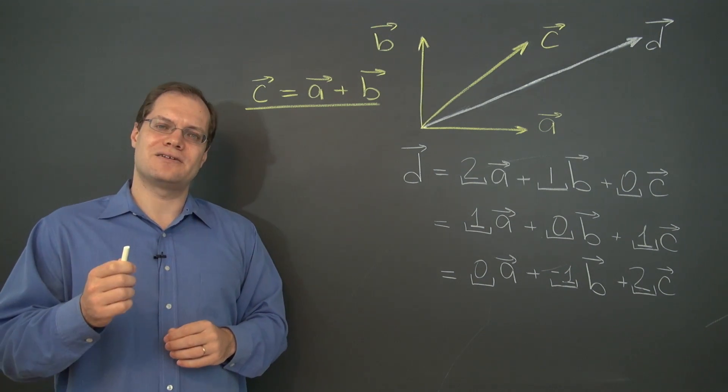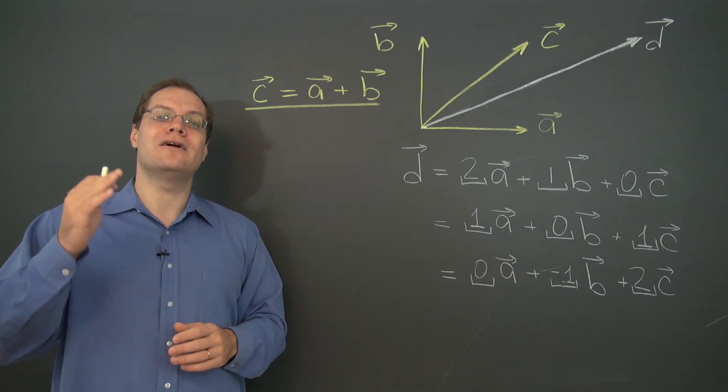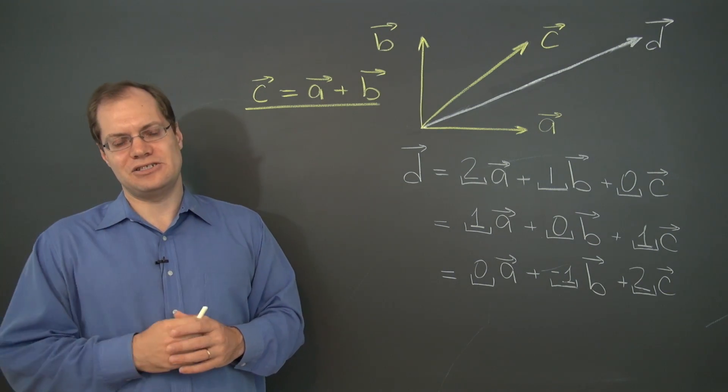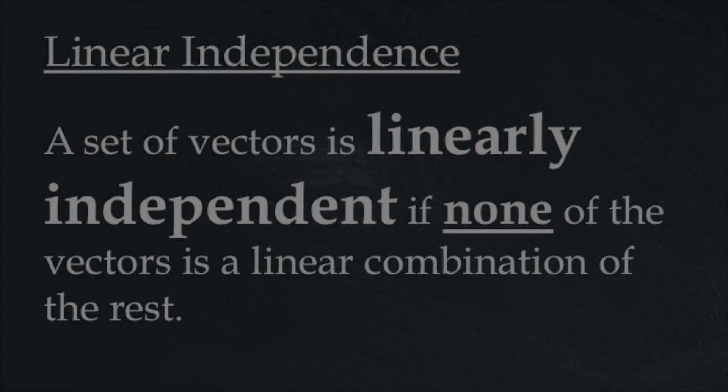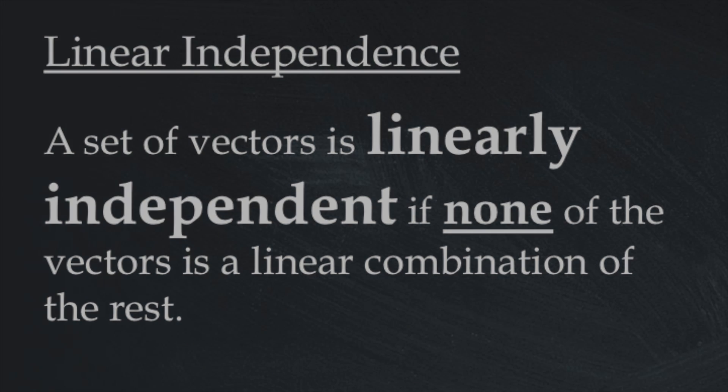Now, linear independence is opposite of linear dependence. A set of vectors is linearly independent if no one of the vectors can be expressed as a linear combination of the rest. Once again, a set of vectors is linearly independent if none of the vectors can be expressed as a linear combination of the rest.